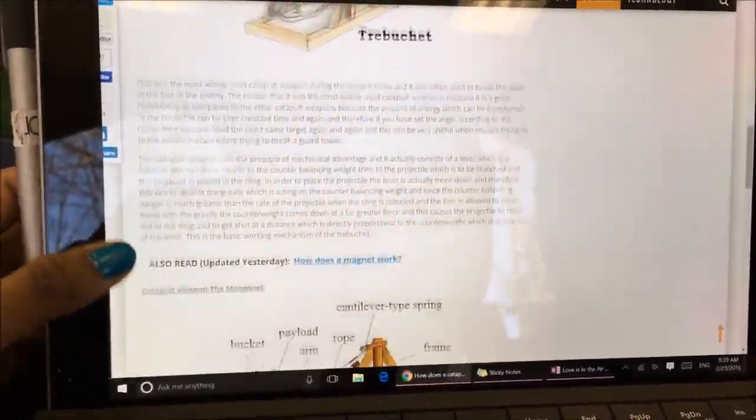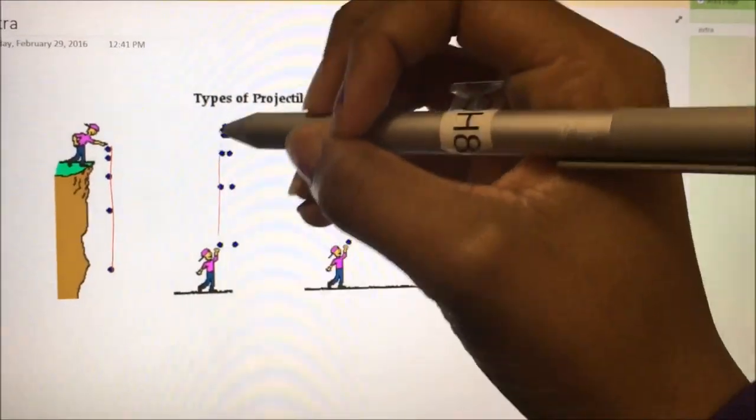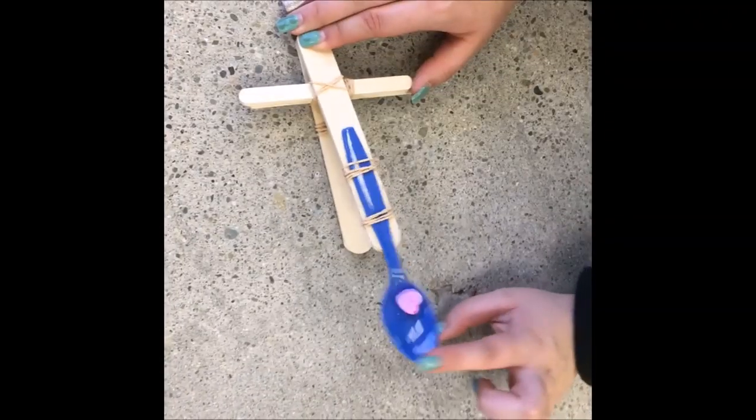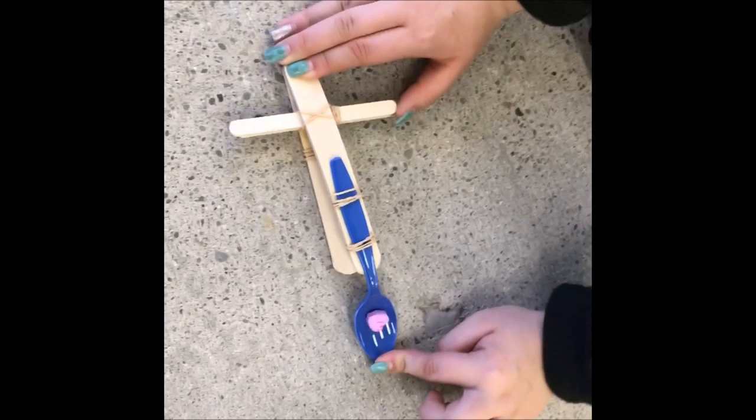Catapults are simple machines that are used to project an object a long distance. A projectile is an object upon which the only force acting is gravity. In our case, the projectile would be the piece of candy. The history of catapults goes back centuries and even millennia to ancient Greece and ancient Roman times.